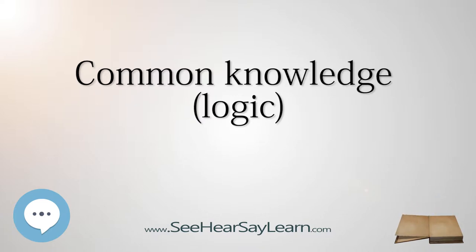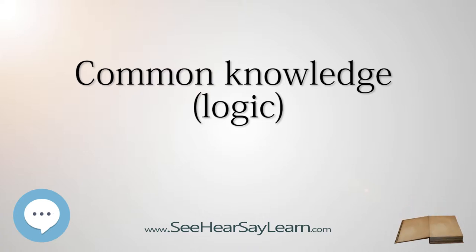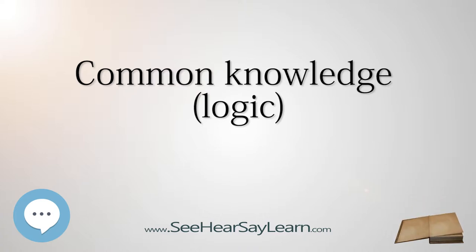What's most interesting about this scenario is that, for K>1, the outsider is only telling the island citizens what they already know: that there are blue-eyed people among them. However, before this fact is announced, the fact is not common knowledge. For K equals 2, it is merely first-order knowledge. Each blue-eyed person knows that there is someone with blue eyes, but each blue-eyed person does not know that the other blue-eyed person has this same knowledge.